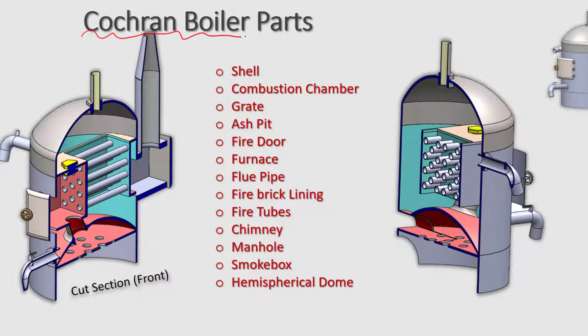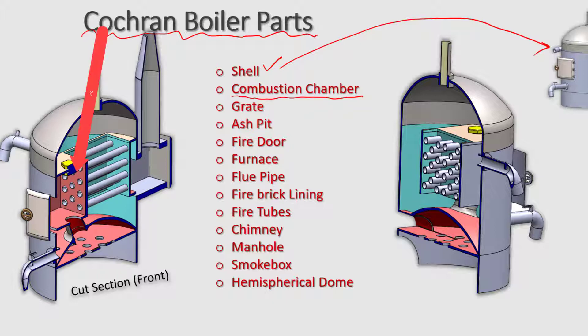Now the main parts of the Cochrane boiler. First is the cell — it has a cylindrical drum with a hemispherical dome at its top. Next is the combustion chamber, where the burning of the fuel takes place.